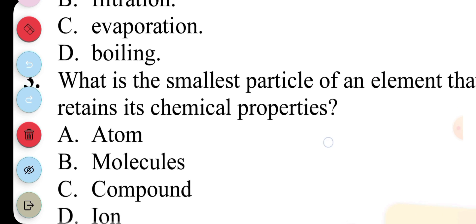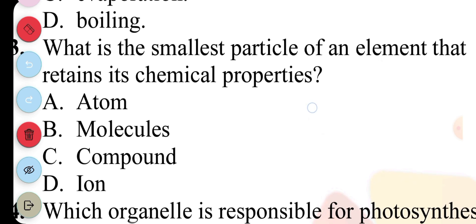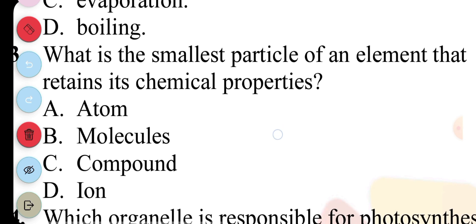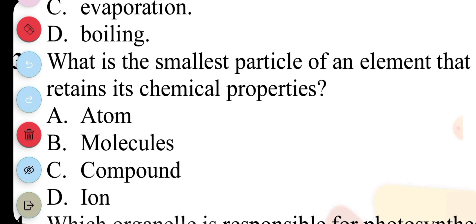Question 3. What is the smallest particle of an element that retains its chemical properties? A. Atom, B. Molecules, C. Compound, D. Ion. And the answer to question 3 is A.